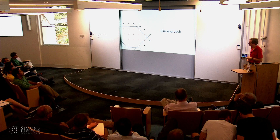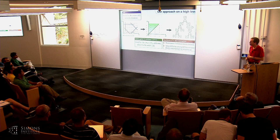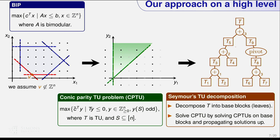Let me explain the approach at a high level. We start with a BIP. We first solve the LP and get a vertex solution — assuming it's fractional and hence half-integral. Then we reduce the BIP to a conic parity TU problem, which I'll call CPTU. This is an ILP with a TU constraint matrix T, right-hand side zero — making it conic — plus one additional constraint: for some subset of coordinates S, the sum of the Y values over those coordinates must be odd.